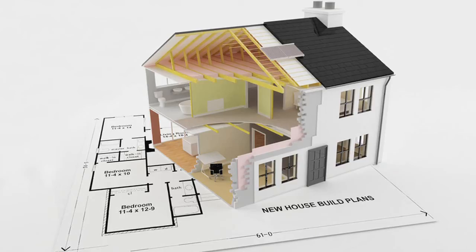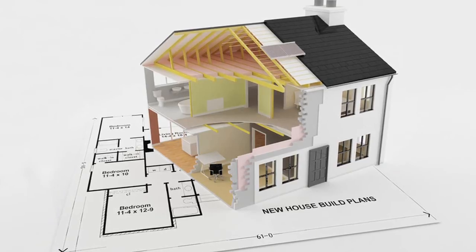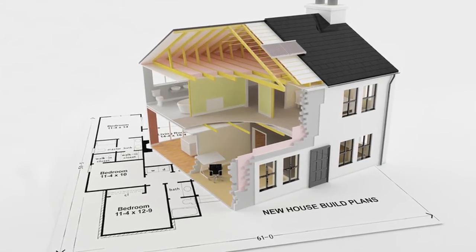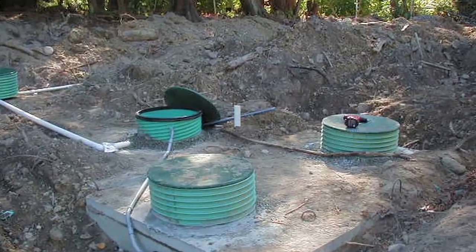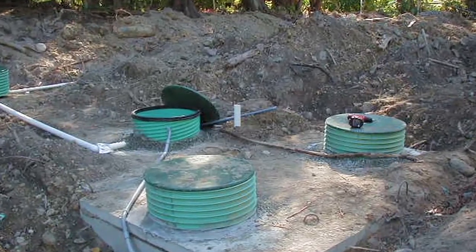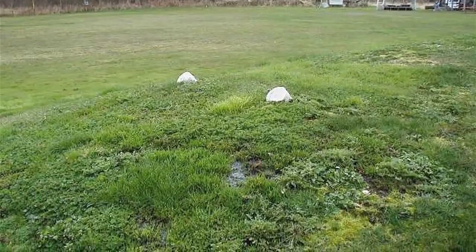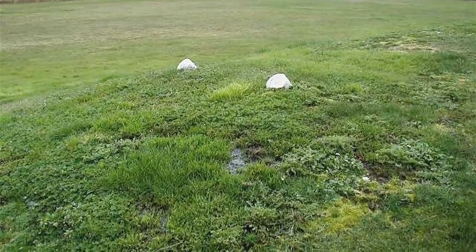When a septic system is designed, the designer and local government will base the size and type of the septic system on the number of bedrooms in the home and the physical features of the property. For design purposes, it is assumed that a bedroom can accommodate two people. If you have more people living in a house than the system was designed for, the system can become overloaded and fail.